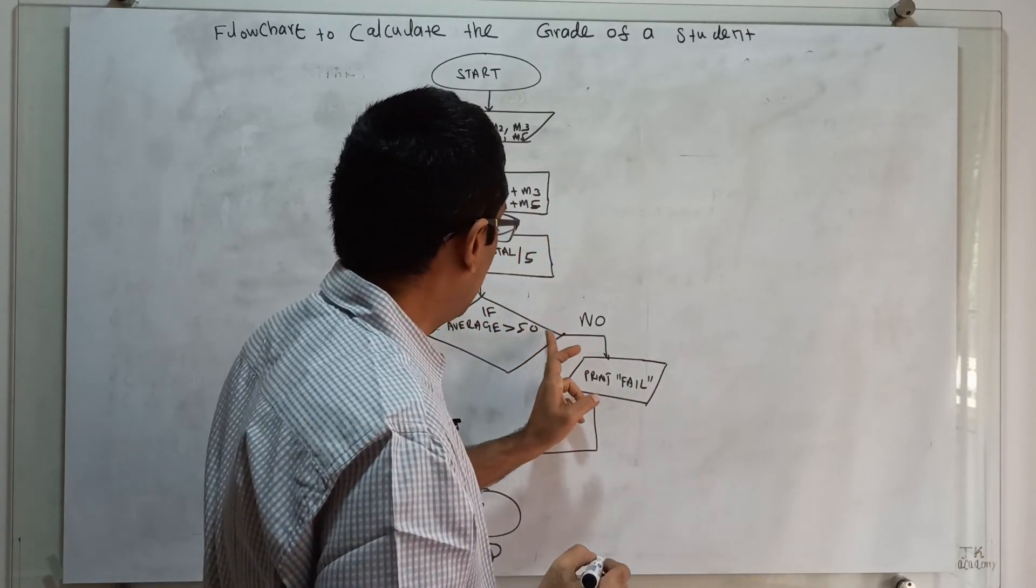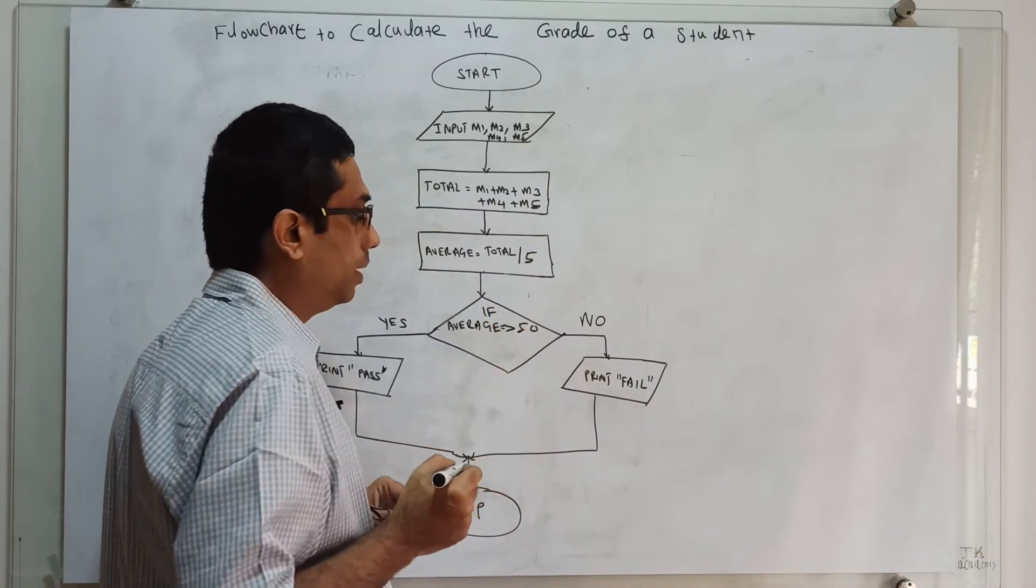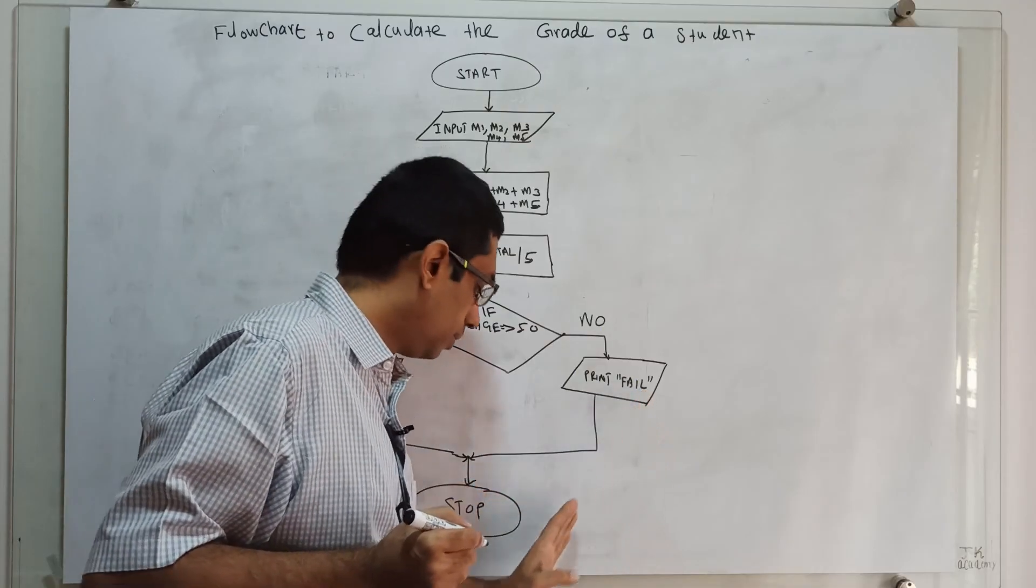...if average is greater than or equal to 50, I print it as pass, otherwise I print it as fail. This is the end of the flowchart.